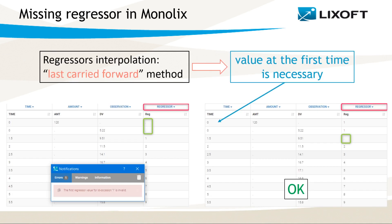Next are regressors. In Monolix, it is allowed to have missing values, but not at the first time point in a dataset. This value is necessary because Monolix uses the last-carried-forward method for interpolation. Here on the left, a missing regressor value is at t equal to 0, which is the first time point, so Monolix gives an error when I accept the dataset. On the right, a missing value is later in time at t equal to 1.5, and the dataset is accepted.